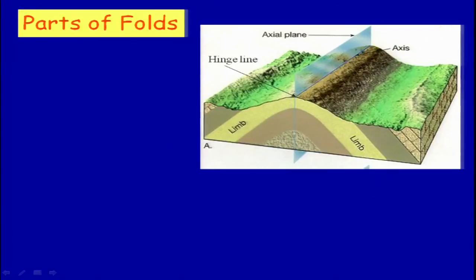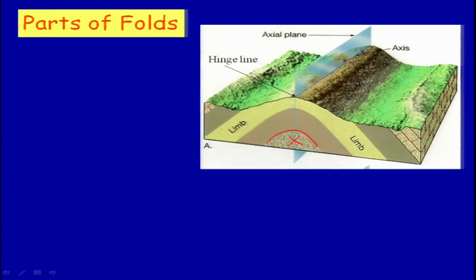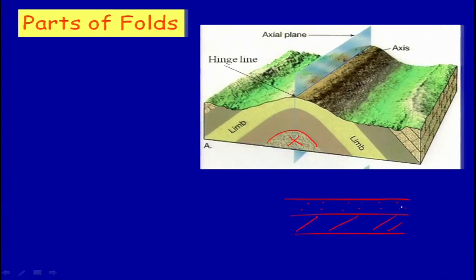Second, what is the strike of the fold — because you cannot put a tunnel in the center. If you have to cross the fold, you will have to put your tunnel somewhere in the limb side. You will also avoid placing it where the beds are dipping at very high inclination. The color variation shown here indicates different types of rocks, because the beds of different lithology will have different composition, hence different strength. That has to be studied well in detail before you select the site.